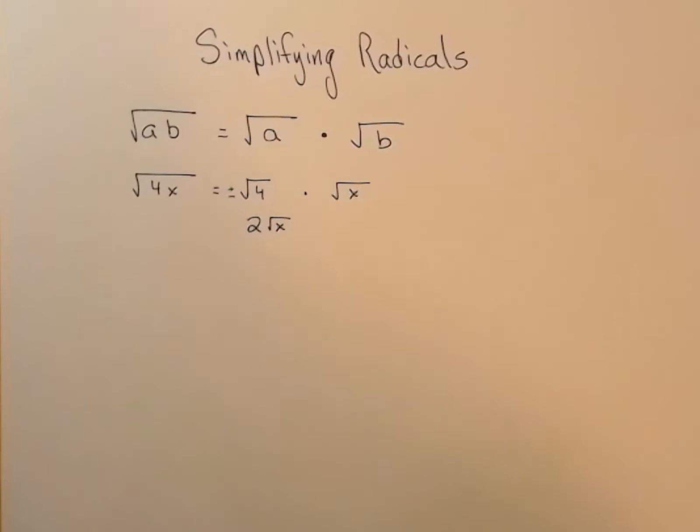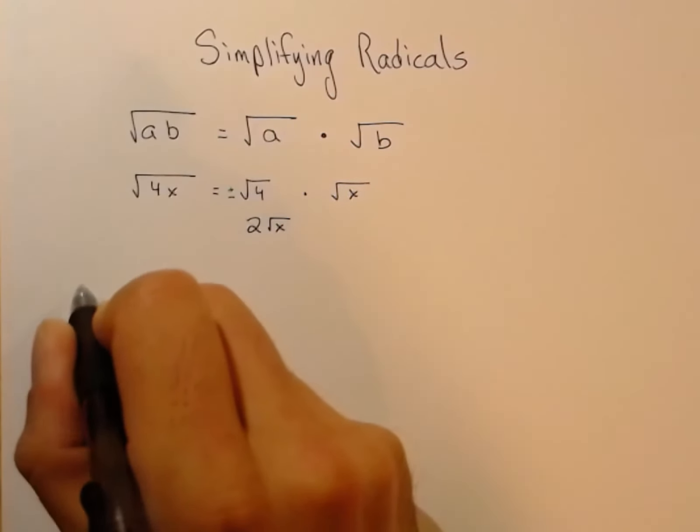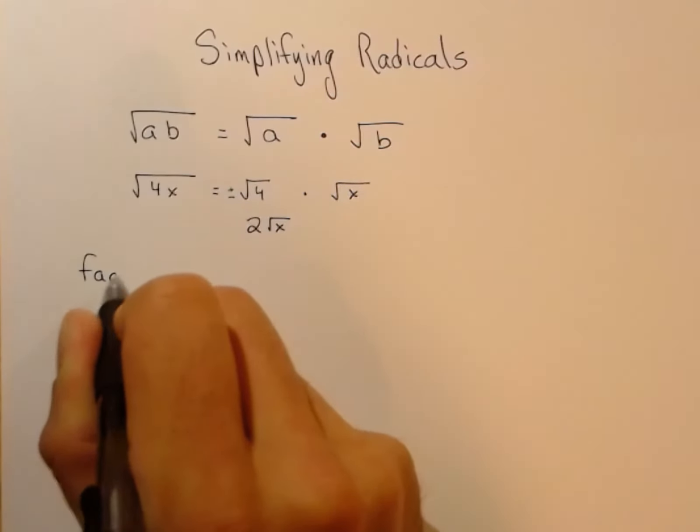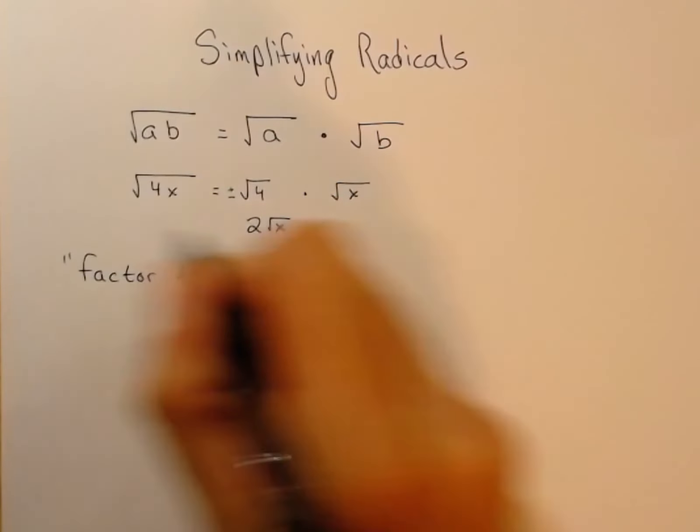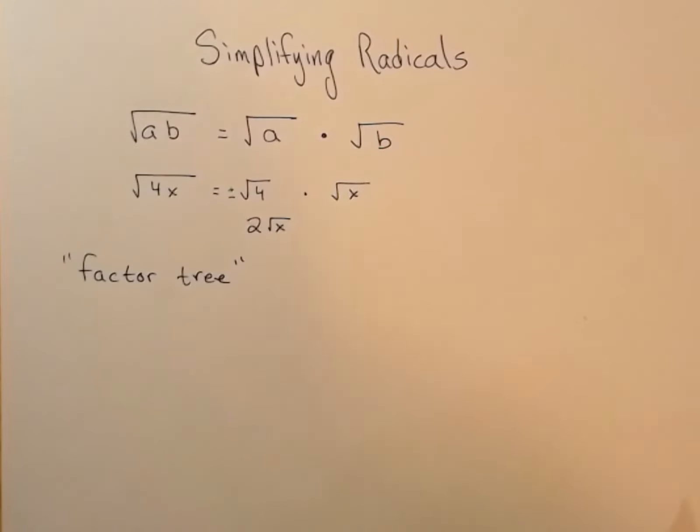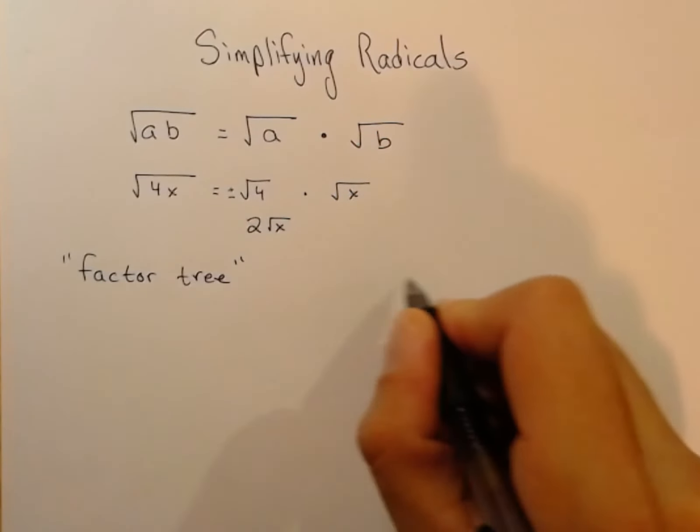I'm going to outline two quick procedures on how to simplify radicals. Both of them involve factoring. One is going to be the factor tree method. I'm just making these names up. They're not specific names.